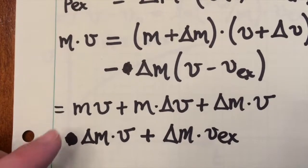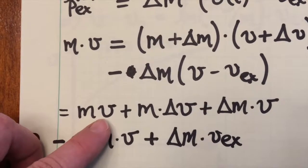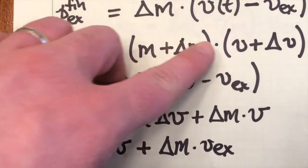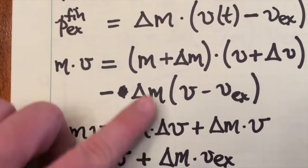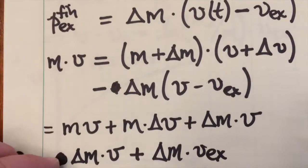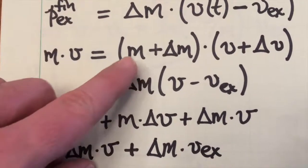And so the right-hand side of this equation just becomes m times v, plus m times delta v, plus delta m times v.